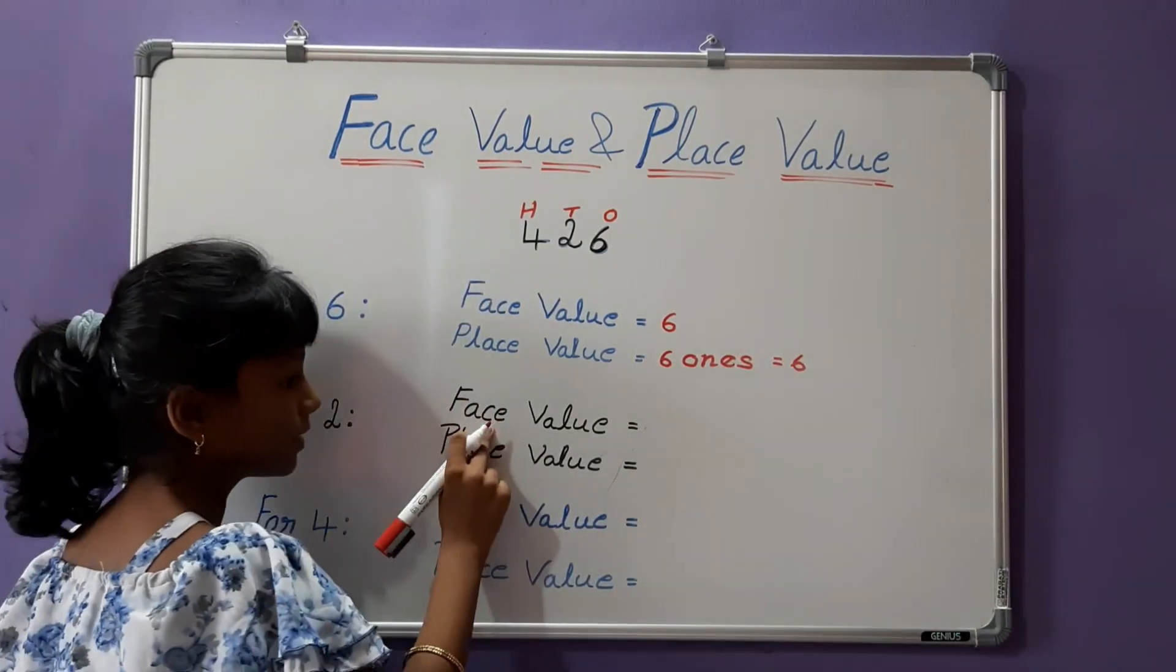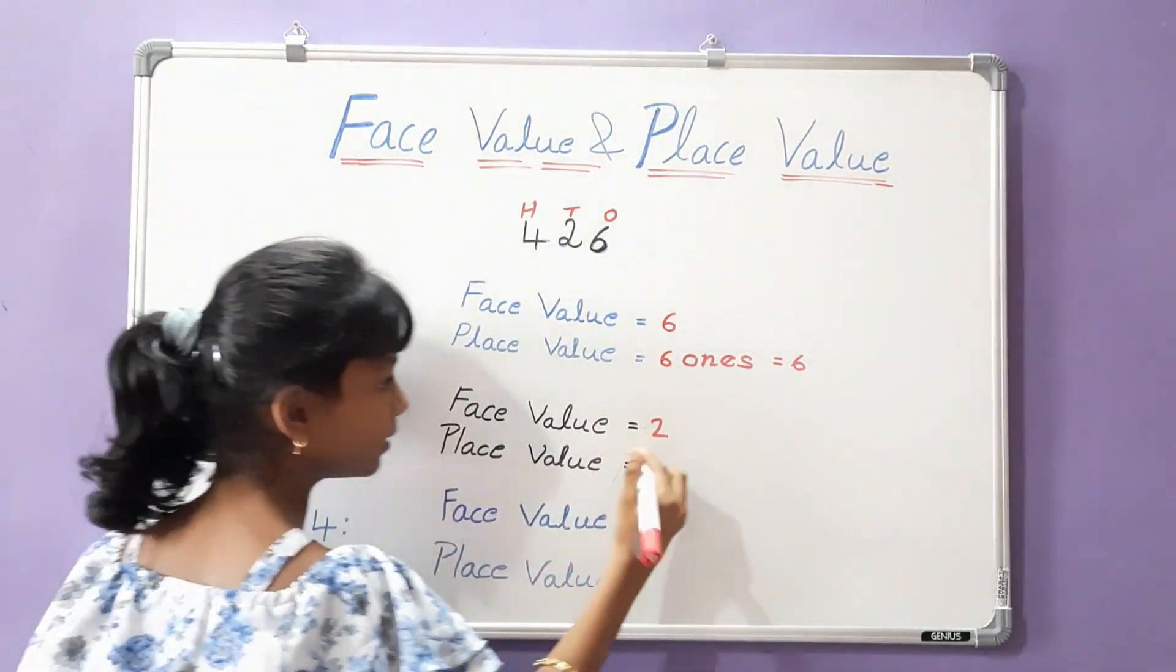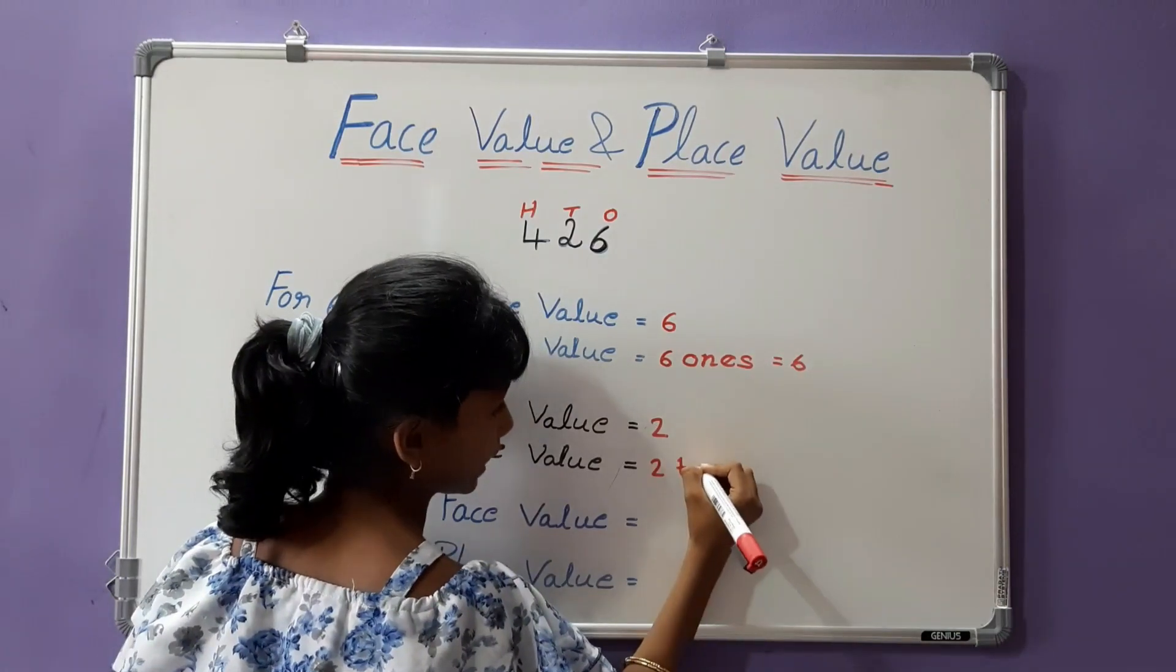For 2, face value is 2. Place value is 2 tens is equal to 20.